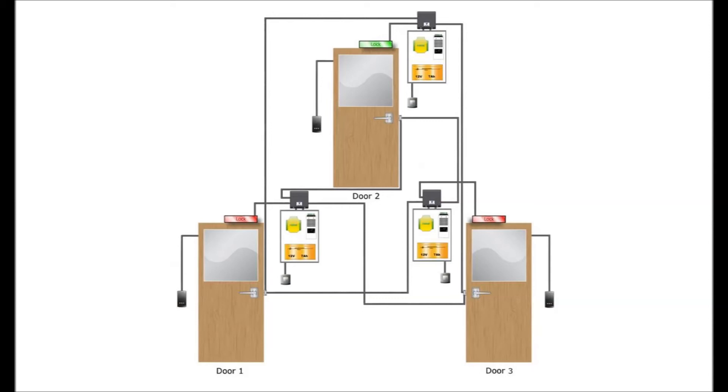In this illustration, we have a three-door system, which will require three interlock devices and three Net 2 boards. Once again, in order for door 1 to be opened, the other two doors will need to be closed.